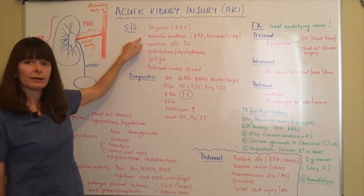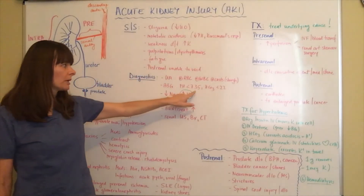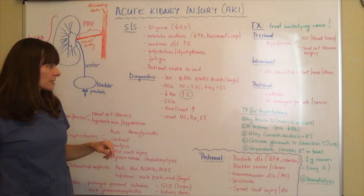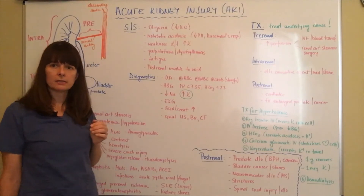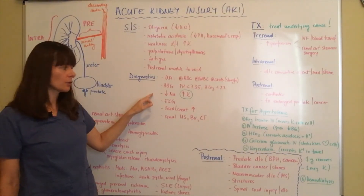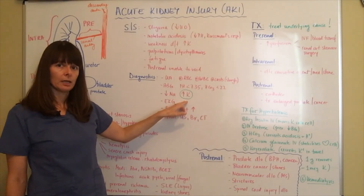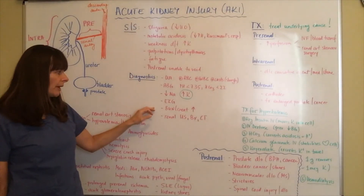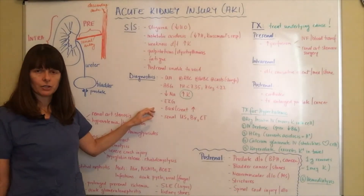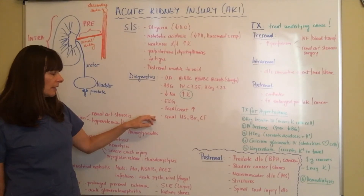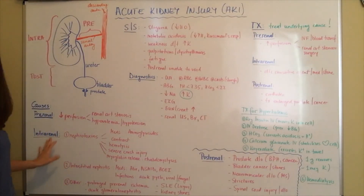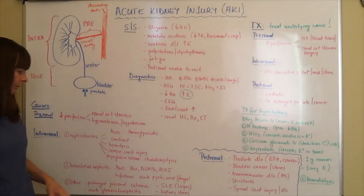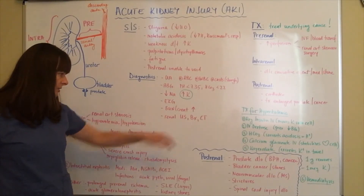ABGs are very important because we worry about metabolic acidosis — a pH less than 7.35 with bicarbonate less than 22. When the kidney cannot regulate sodium and potassium, sodium will usually be decreased and potassium will be increased, causing hyperkalemia. Because hyperkalemia can cause palpitations and dysrhythmias, we want to check an EKG. BUN and creatinine will be elevated — those are the two golden measures of kidney function. For intrarenal causes, a renal ultrasound, biopsy, or CT scan may be done to evaluate for lupus or kidney stones.